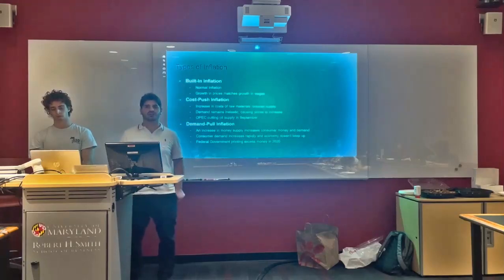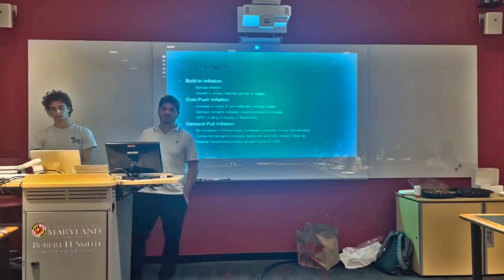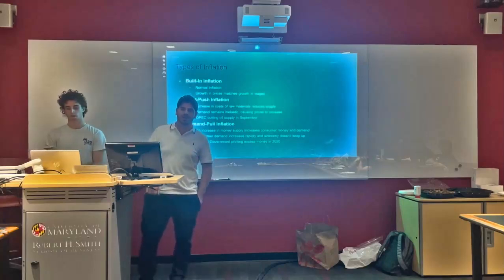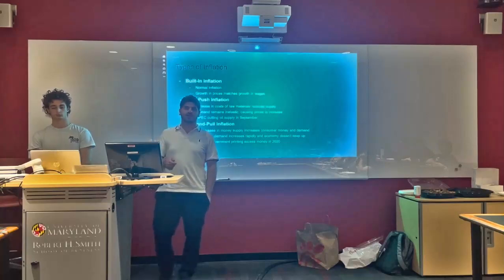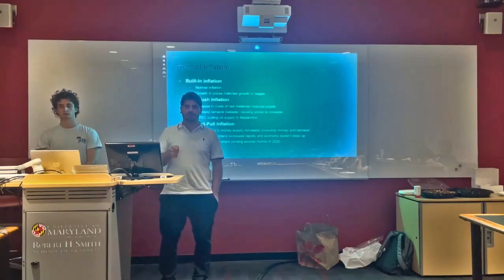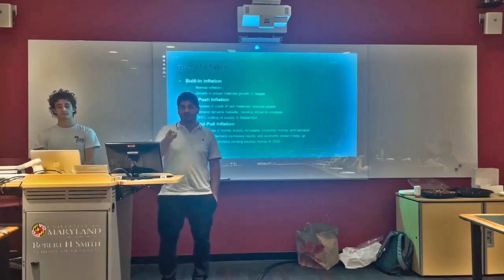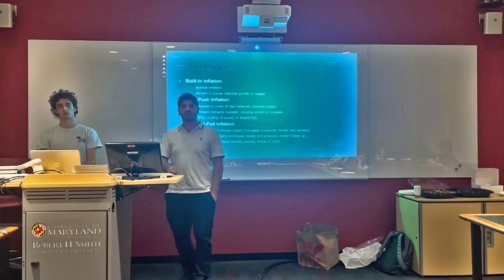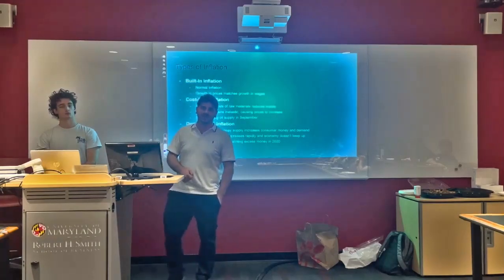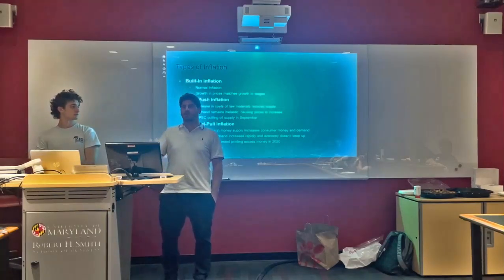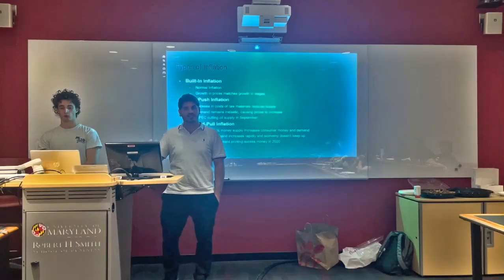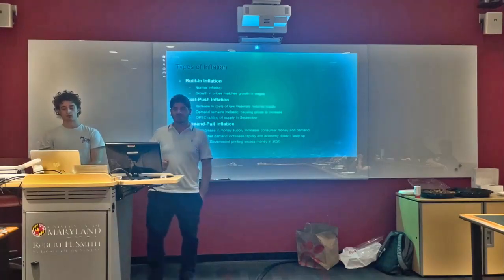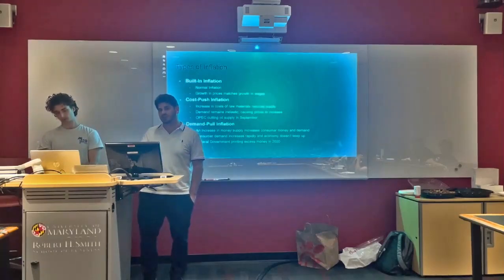The second variety is cost-push inflation, which occurs when there is a spike in the prices of cost inputs for producers. For example, when OPEC decided to cut the supply of oil and the price per barrel spiked to over $90, that caused inflation because any product that uses oil also went up in price. If you went to get gas at that time, the price per gallon was around $3.40–$3.50, compared to the usual $3.20. When your cost of inputs increases, your price per product also increases, causing inflation.